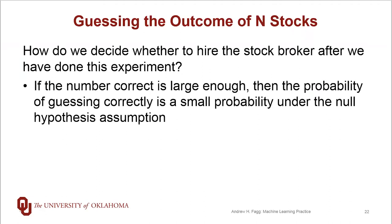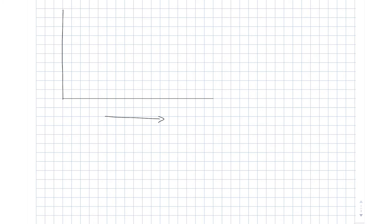The observation from what we've already talked about is that under the null hypothesis assumption, the probability of the stockbroker actually getting many guesses correct is actually relatively small. We can take advantage of this in making our decision. Along the horizontal axis is the number correct, and the vertical axis is a likelihood or probability. This is a discrete decision, so these are true probabilities, but when n gets large we can approximate the distribution with a Gaussian, which is a continuous distribution.